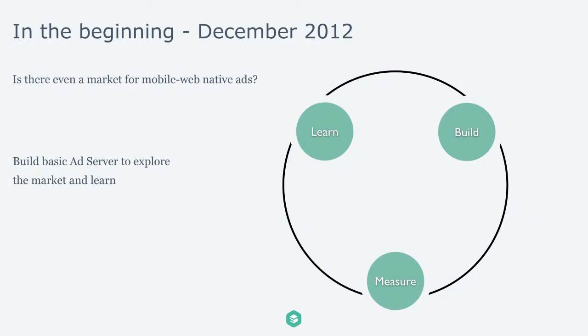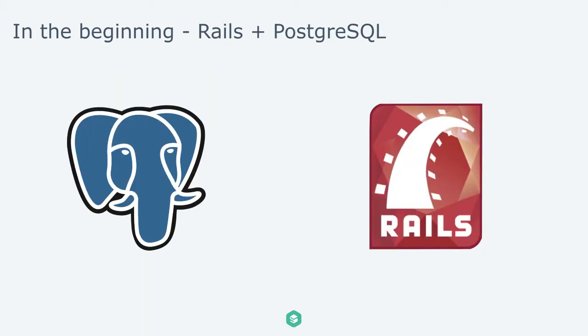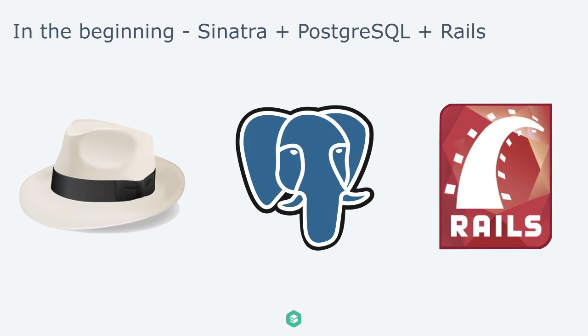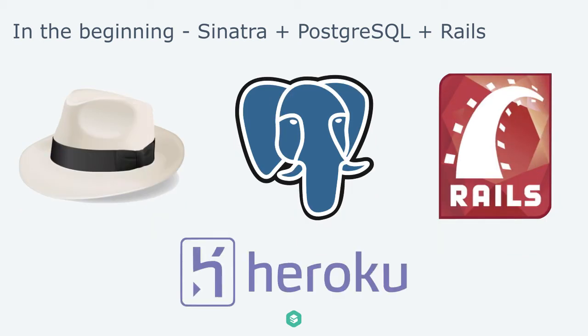We got started with all this just over a year ago. We came into this space asking whether there was even a market for us in mobile — would people buy ads through our system, could we get publishers to run our ads? The company is very big into the lean startup methodology, so we do this build, measure, learn cycle with every new product. The idea was: build the most basic simple system we can, see if we can get some users, and not worry about scale until we hit that problem. So in the beginning we had a Rails app and a Postgres database, then we added a Sinatra app for serving ads, all hosted on Heroku.